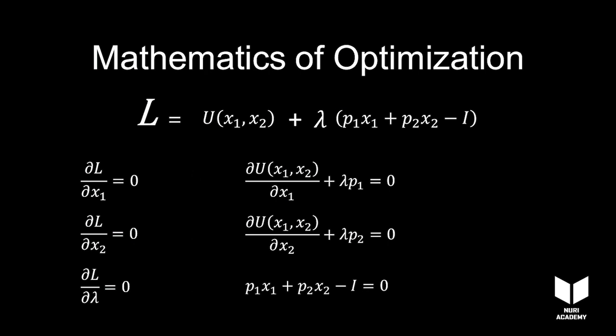We have three equations and three unknowns. Solve for x1 and x2. The result is the values of x1 and x2 that optimize the utility function and satisfy the constraint.